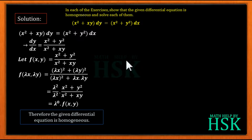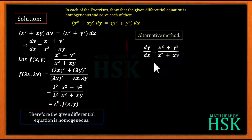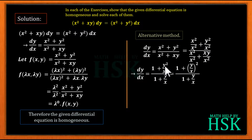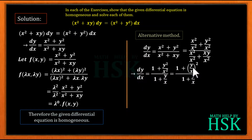In the second method, we write dy/dx = (x² + y²) / (x² + xy), then divide both the numerator and denominator by x². This gives dy/dx = (1 + y²/x²) / (1 + y/x), which can be written as (1 + (y/x)²) / (1 + y/x). Since dy/dx is now expressed entirely in terms of y/x, we can write dy/dx = g(y/x).